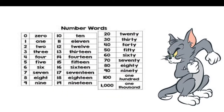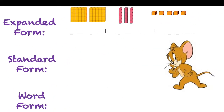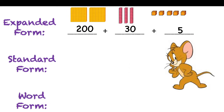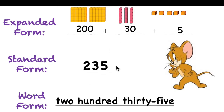You can practice during the summer vacation how we write numbers — it will be very useful at the beginning of grade two. We write numbers in three different forms: expanded form, standard form, and word form. Expanded form is when you add hundreds, tens, and ones in an addition sentence separately. How many hundreds? Two hundred. Tens? Three tens — thirty. Ones? Five. Standard form: take first digit — two, three, five. Two hundred thirty-five.